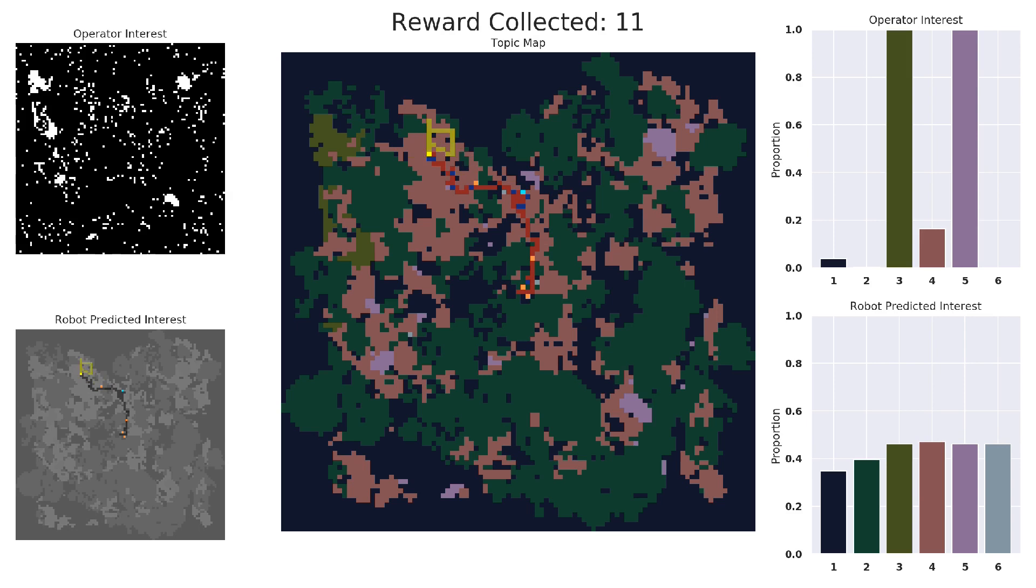Along the robot's path, red pixels represent visited locations with uninteresting observations, and blue pixels represent visited locations that were interesting.